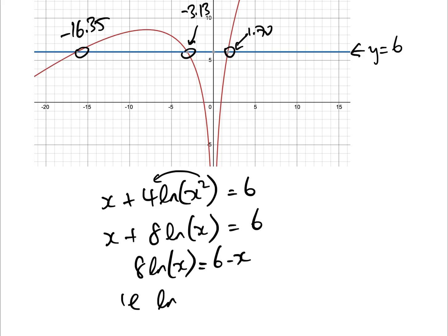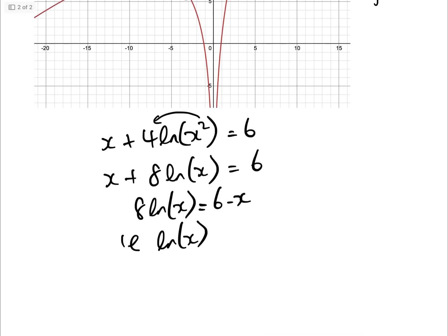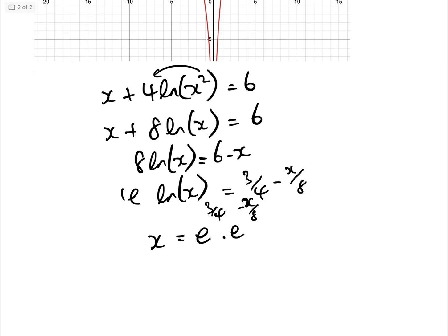Then they go 8 log x equals 6 minus x, i.e. log x equals 3 quarters minus x over 8. Then we raise to the power and we get that x equals e to the 3 quarters times e to the minus x over 8. Again, taking it across now, we get x e to the x over 8 equals e to the 3 quarters.